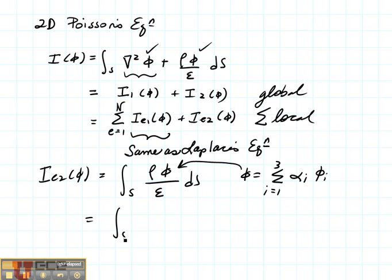So we're going to end up with the integral over the surface, rho over epsilon, sum from 1 to 3 of alpha I phi I dS. Certainly this term can come outside, and if we assume that the constants are the same over the element, we can bring that outside as well.